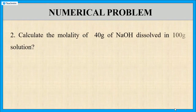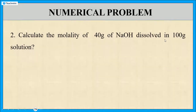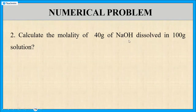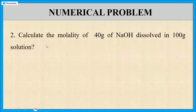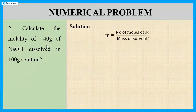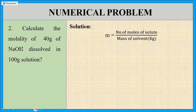Next problem: calculate the molality of 40 grams of sodium hydroxide dissolved in 100 grams of solution. Here the solute is sodium hydroxide, but the solvent mass is not directly given — only the solution mass is given. First, write down the formula: molality m equals number of moles of solute divided by mass of solvent. Calculate the number of moles of sodium hydroxide using: mass of sodium hydroxide divided by molecular mass of sodium hydroxide.